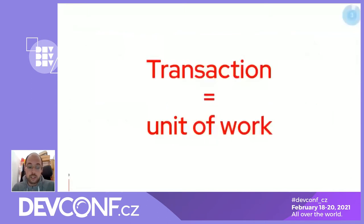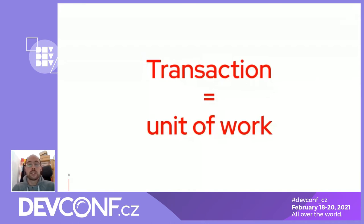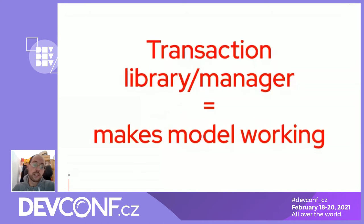To start, I'll talk about some basic terms to understand the context. A transaction is a unit of work — something that could be split into several steps, but we assume all those steps will be done as one unit. This is what the transaction manager or library ensures — it manages the transactions and every step inside the transaction to be taken as a single unit.